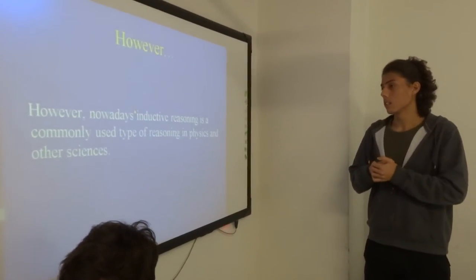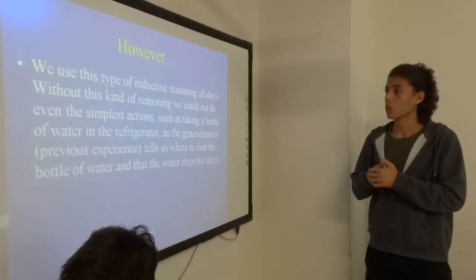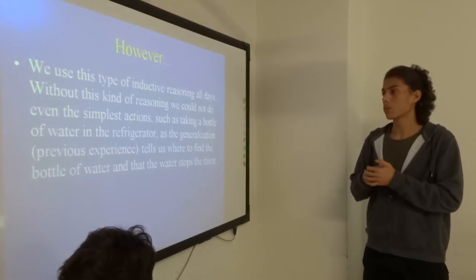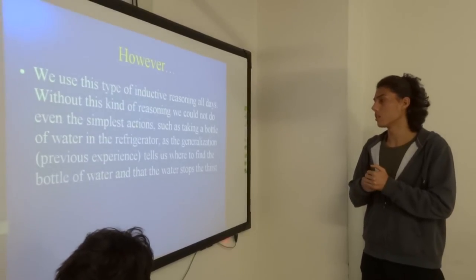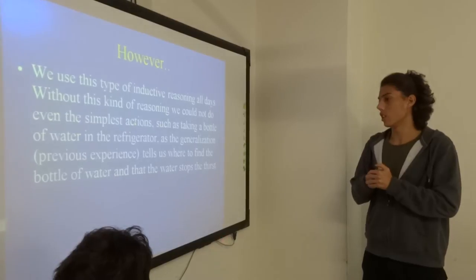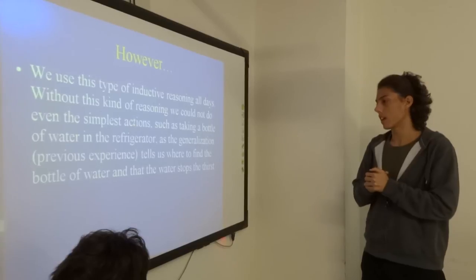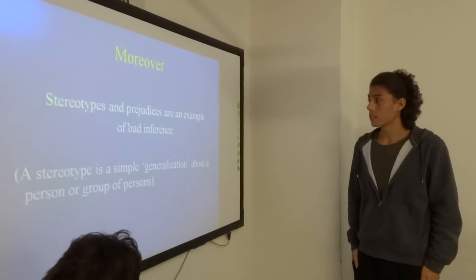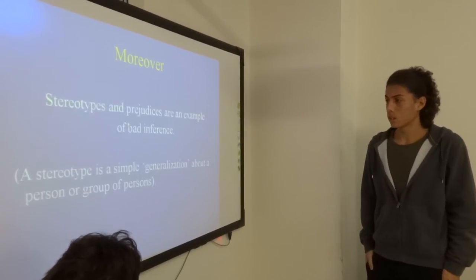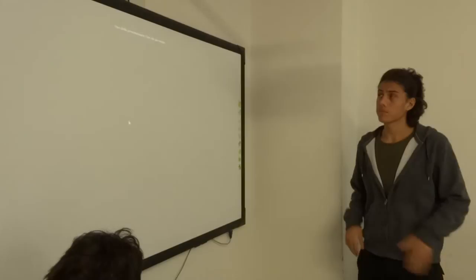In conclusion, does certainty or absolute truth exist? However, nowadays inductive reasoning is a commonly used type of reasoning in physics and other sciences. We use this type of inductive reasoning for days. Without this kind of reasoning, we could not do even the simplest actions, such as taking a bottle of water in the refrigerator, as the generalization of previous experiences tells us where to find the bottle of water. Moreover, stereotypes and prejudice are an example of bad inference. A stereotype is a simple generalization about a person or group of persons. Thank you.